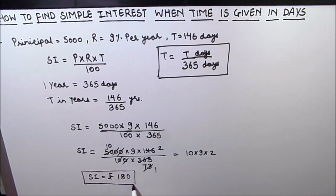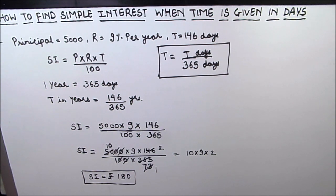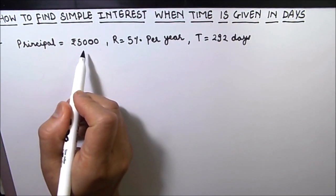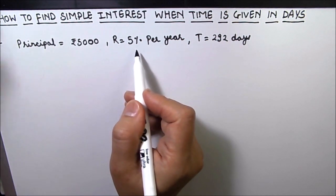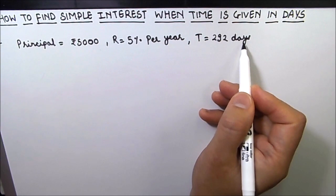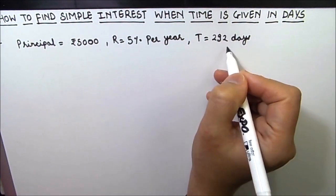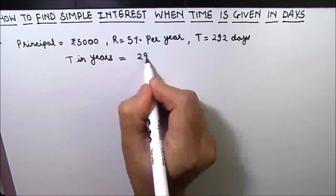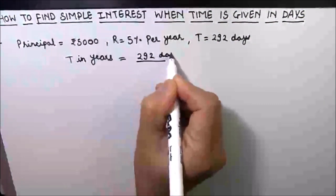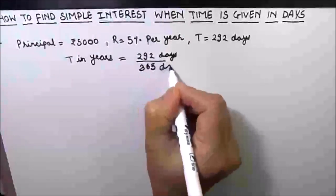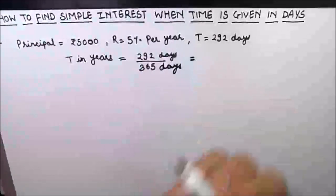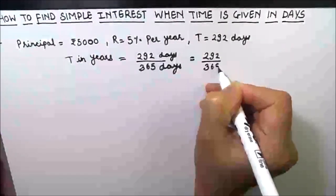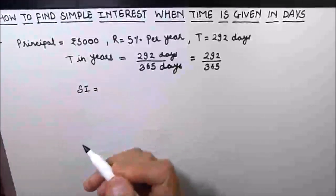So 180 rupees is our final answer for the first example. Now let's take a second example. Here the principal amount is 5000 rupees, rate of interest is 5 percent per year, and time period is 292 days. First, we convert: time period in years = 292 divided by 365.